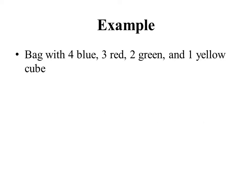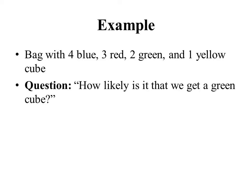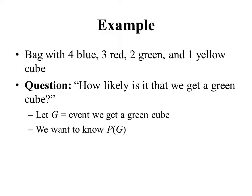Let's illustrate these ideas with a simple example. Suppose we have a bag with four blue, three red, two green, and one yellow cube, and we reach into that bag and randomly grab a cube. We might ask: how likely is it that we get a green cube? If we let G denote the event that we get a green cube, then in mathematical notation, we want to know the probability of G.